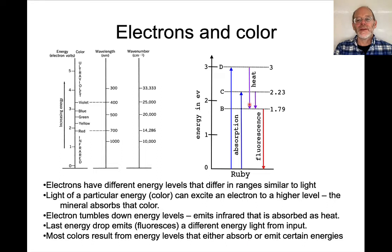There is energy that's being emitted, but it's in the infrared region, so we don't see that emission. Once it reaches this energy state and drops back down to the ground state, then it is fluorescing that energy, and that energy is in the red region. So that's why ruby is red.